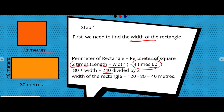Now we solve for width. The 2 on the left side moves to the right as division, so length + width = 240 ÷ 2 = 120. Since the opposite operation of addition is subtraction, width = 120 − 80 = 40. So the width of the rectangular field is 40 meters.